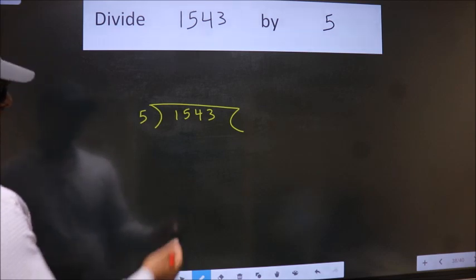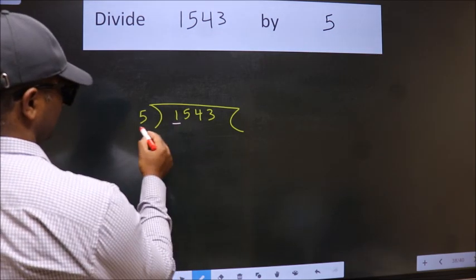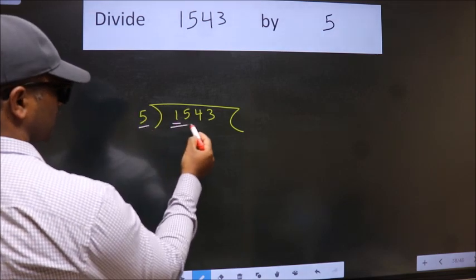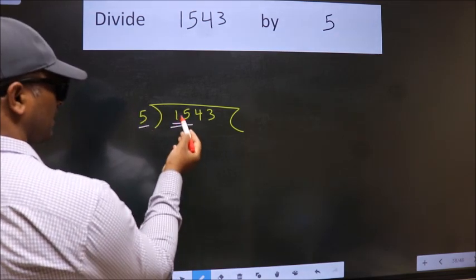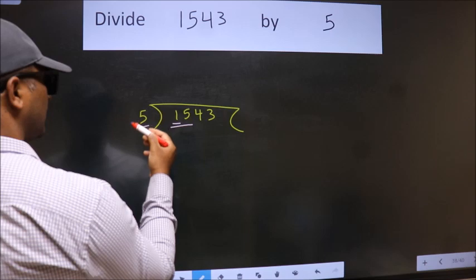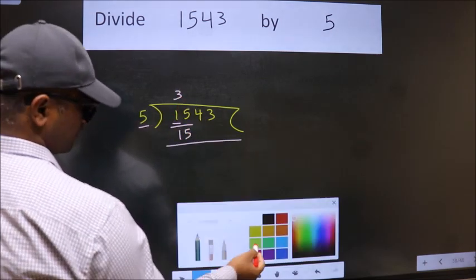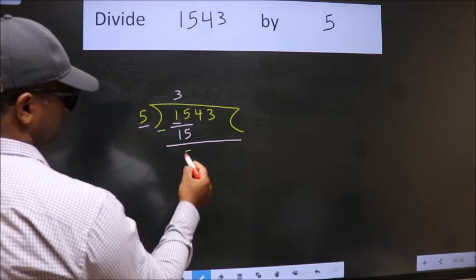Next, here we have 1. Here 5. 1 is smaller than 5, so we should take two numbers: 15. When do we get 15 in the 5 table? 5 times 3 is 15. Now we should subtract. We get 0.